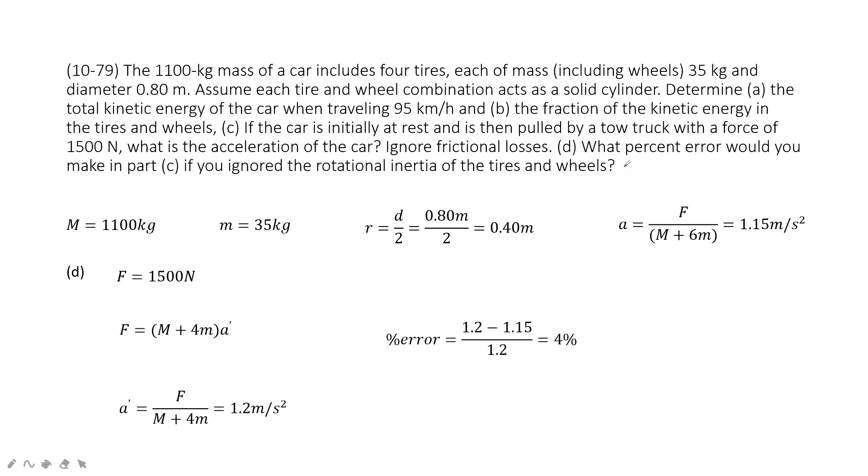The next one asks you the percentage error you would make if you just ignore the rotational motion. That means we consider this car and the tire as a united object that does not do rotational motion. The force acted by the truck equals total mass times acceleration. A plus is F over capital mass plus 4M. Then we find the percent error is just 4%. Thank you.